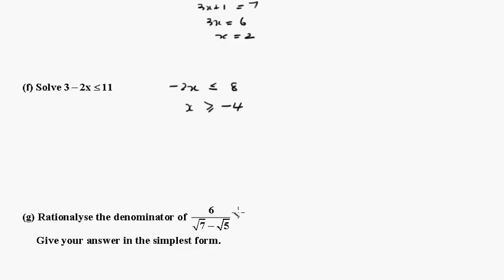Okay, g, rationalising by multiplying by the conjugate, that's root 7 plus root 5 over root 7 plus root 5. Let's put the 6 out the front, and this denominator becomes 7 minus 5, which is 2, and 2 into 6 goes 3. So that's 3 times root 7 plus root 5.